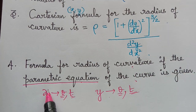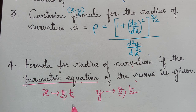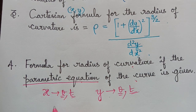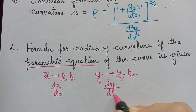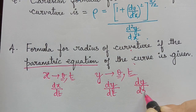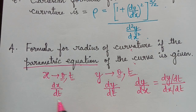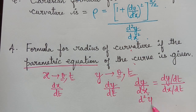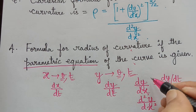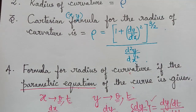The first method is to differentiate x with respect to the parameter t, and differentiate y with respect to t as well. Then find dy/dx, which equals (dy/dt) divided by (dx/dt). After finding dy/dx, we can find d²y/dx². Using these two values, we can apply them in the Cartesian formula to find the radius of curvature.